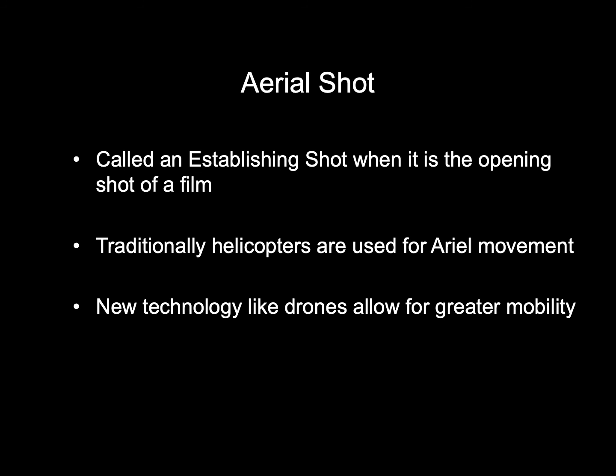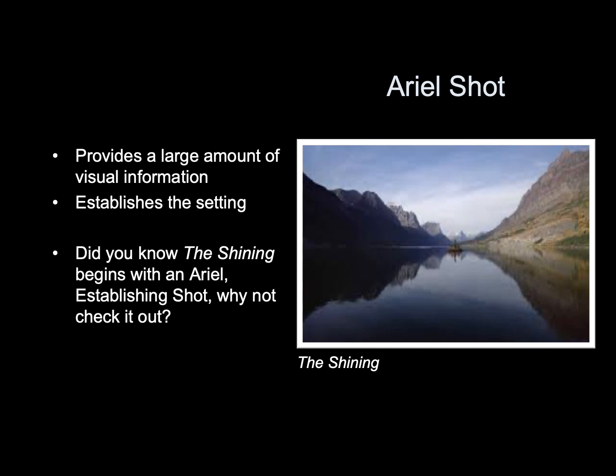Aerial shot: called an establishing shot when it's the opening shot of the film. Traditionally, helicopters are used for aerial movement, but new technology like drones allows for greater mobility. Aerial shots provide a large amount of information and establish the setting. Did you know The Shining begins with an aerial establishing shot? Why not check it out?